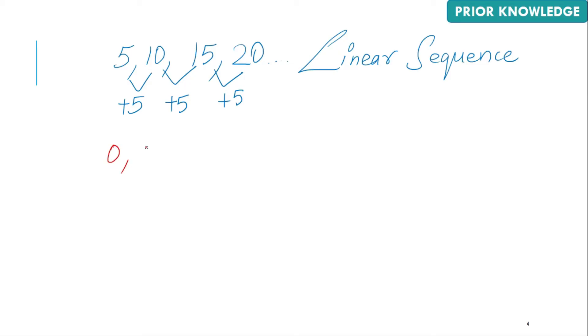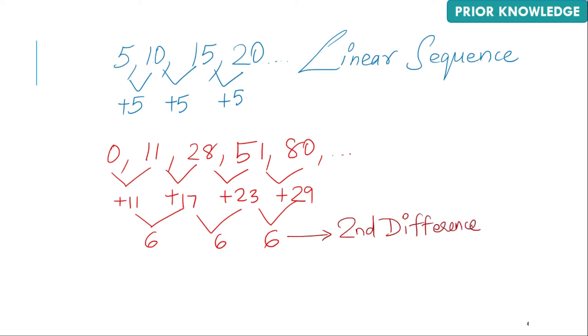Consider the terms 0, 11, 28, 51, 80. Looking for the first difference, you can see it's 11, plus 17, plus 23, plus 29. The first difference here is not a constant. You look for the second difference: 17 minus 11 is 6, 23 minus 17 is again 6, and 29 minus 23 is again 6. So here we have the second difference as a constant, so we call this sequence a quadratic sequence.